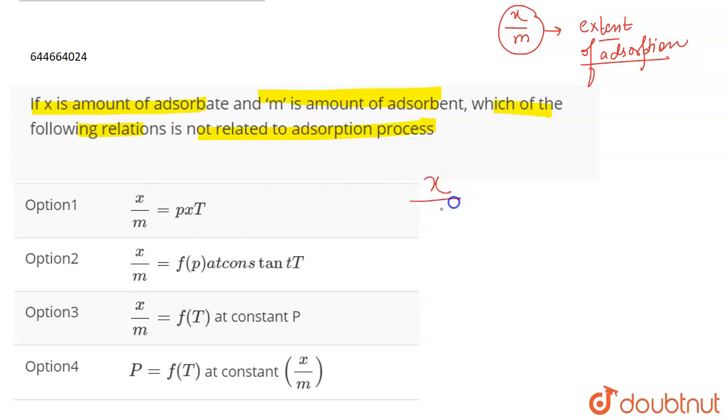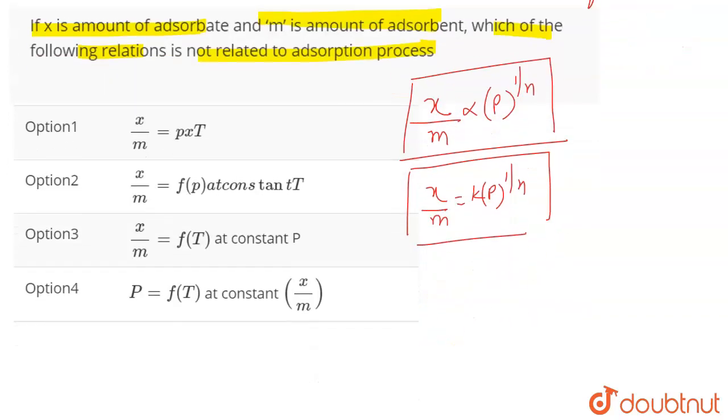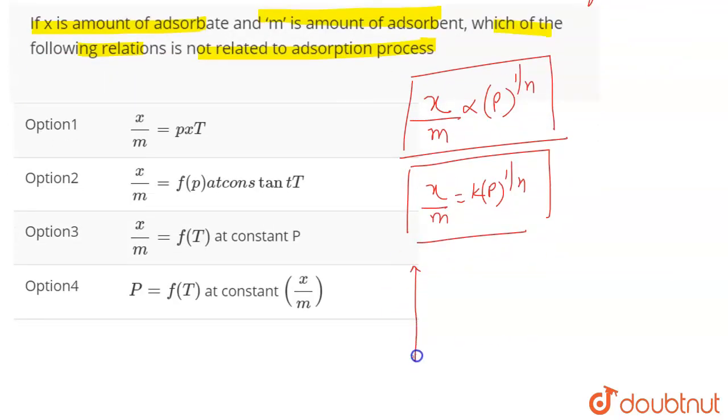Now there is a relationship by the Langmuir adsorption isotherm that at constant temperature, X/M is proportional to P to the power of 1/n, where n is a constant and when we remove the sign of proportionality, we get another constant which is K. So it is proportional to P to the power 1/n. And if we plot a curve between X/M and pressure, we get a curve something like this at constant temperature.